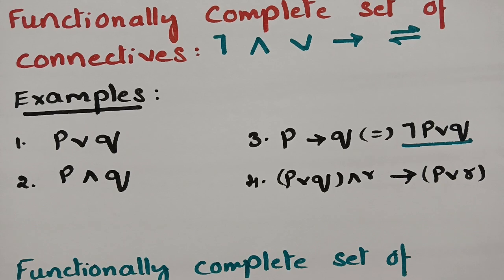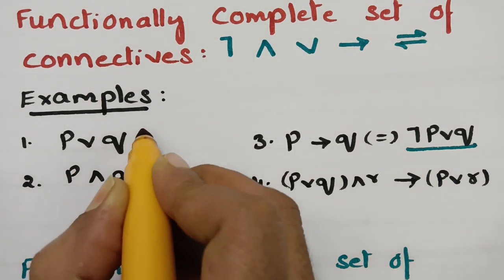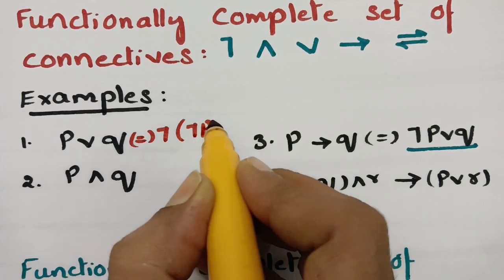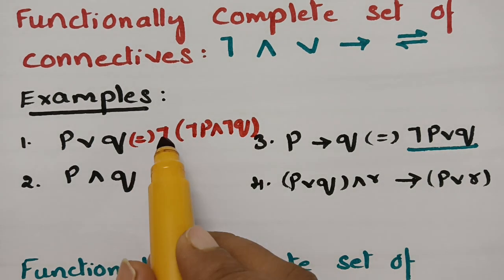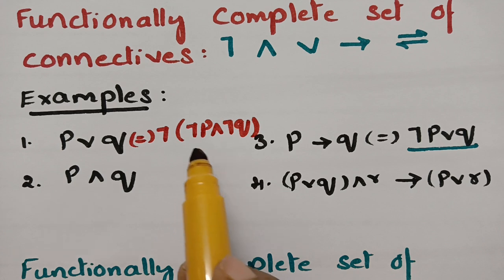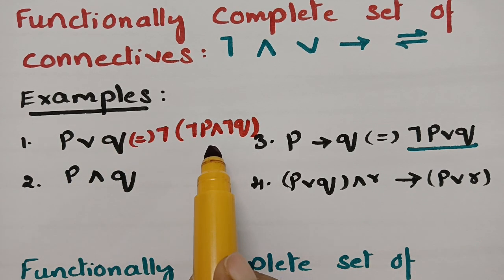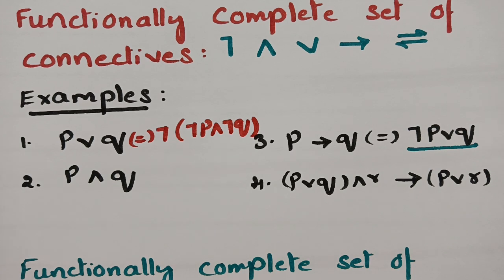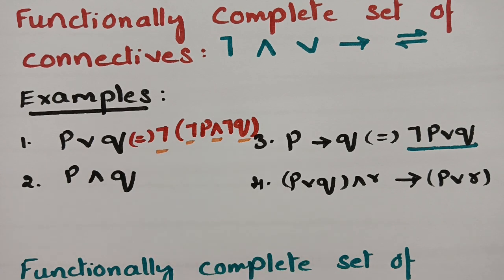For example, consider P∨Q. P∨Q can be expressed as the equivalent formula: negation of (negation P ∧ negation Q). Applying De Morgan's law and double negation, we get P∨Q back. So in this equivalent formula, we have only negation and conjunction. Therefore, the set {negation, conjunction} is called a functionally complete set.